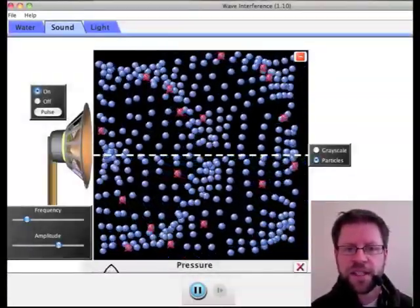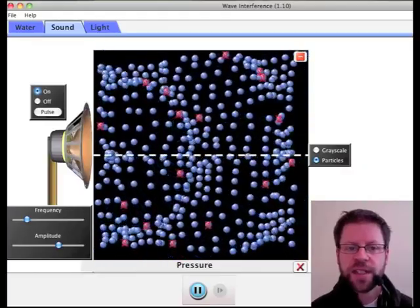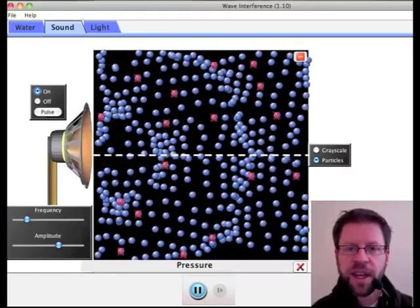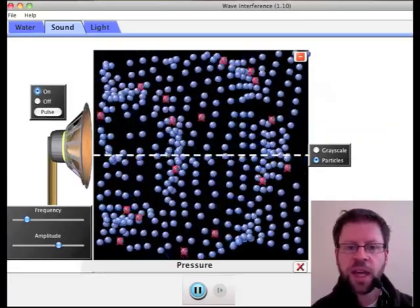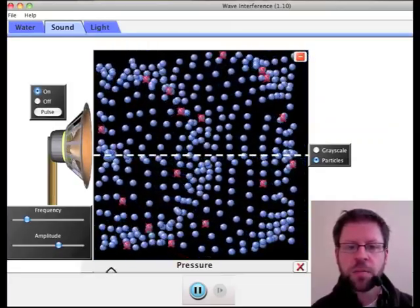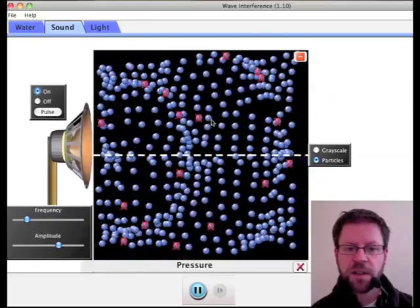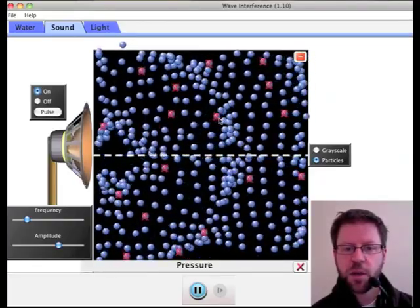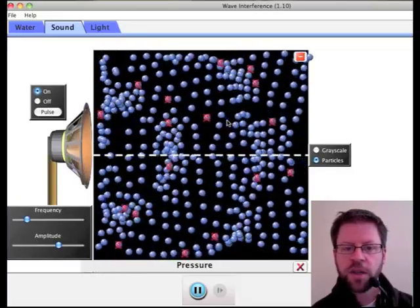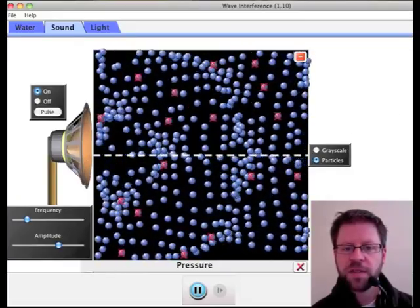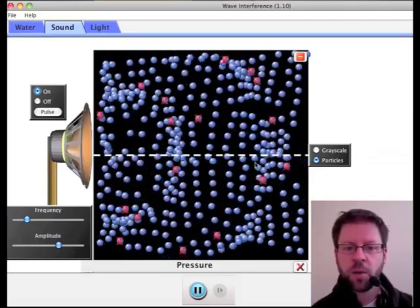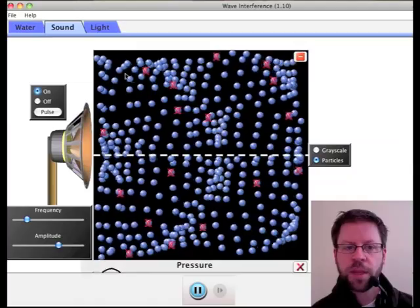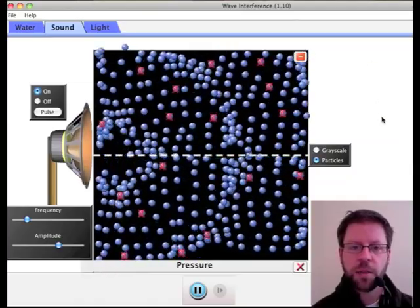In this PhET simulation called wave interference, you can see an approximation of a longitudinal wave. Remember the characteristic of a longitudinal wave is that the particle motion moves in the same direction as the energy is being transferred. Perhaps focus in on this guy right here. You can see it's just going back and forth, back and forth. Even though the energy of the wave is being transferred in the more or less horizontal direction, at least if you're down here at the axis. It's going up a little bit if you're looking above the axis there.